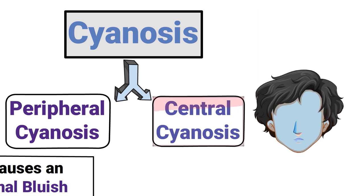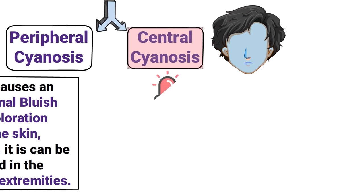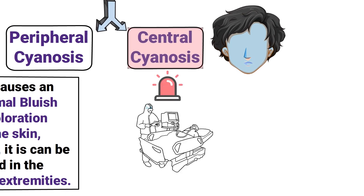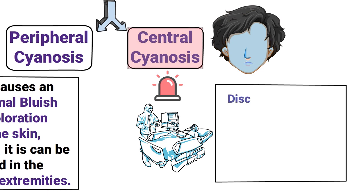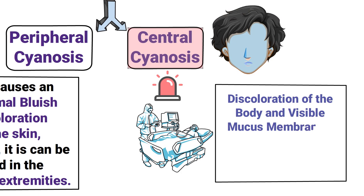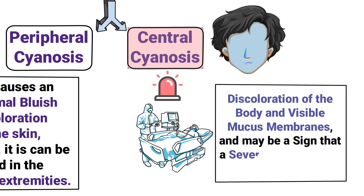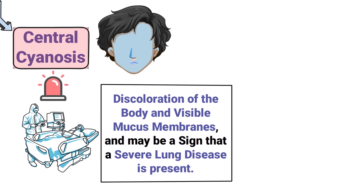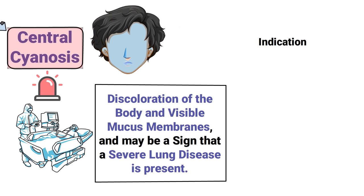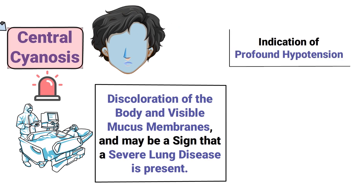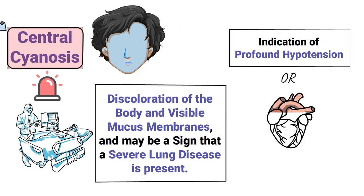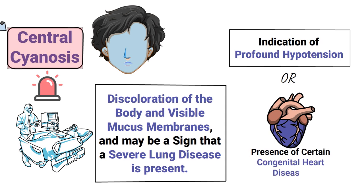Central cyanosis is the more serious type and could be an indication of a life-threatening medical emergency. It involves discoloration of the body and visible mucous membranes, and may be a sign of severe lung disease. It can also indicate profound hypotension or the presence of certain congenital heart diseases.